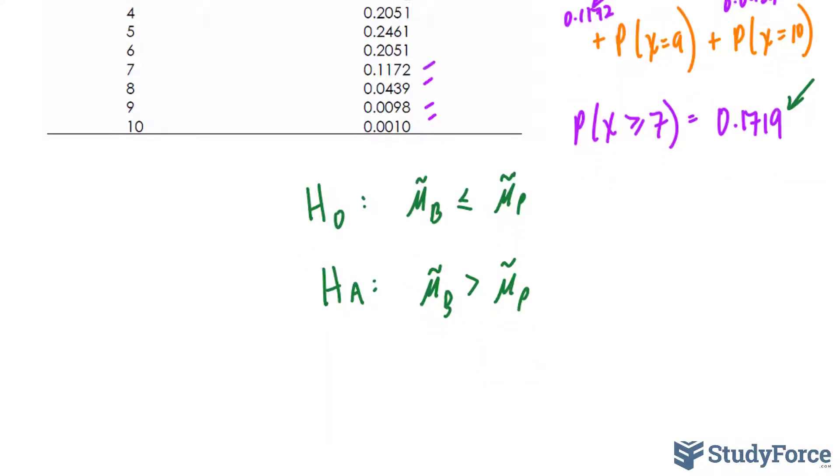Okay, from here we can start to interpret the following. We can say that because P(X ≥ 7) is greater than 0.05, we do not reject the null hypothesis. And for this reason, there's insufficient evidence at 0.05 significance level to conclude that the new drug lowers the systolic blood pressure.